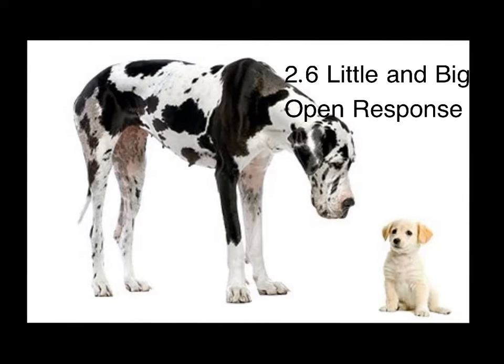As you can see, the lesson is entitled 2.6, Little and Big. From the picture there, hopefully you've got an idea that it might have something to do with dogs.